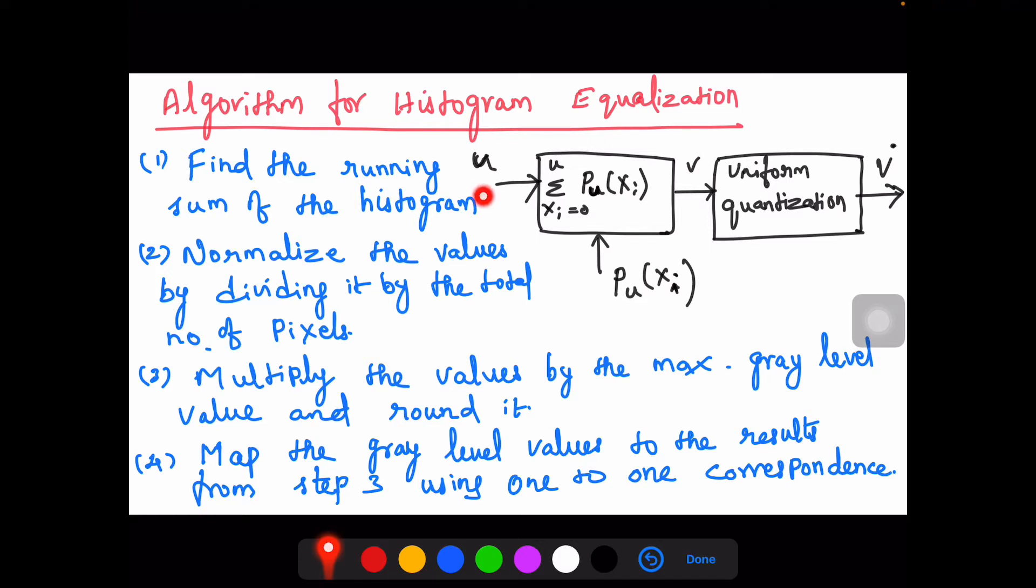Let us take U to be the original image and V to be the uniform quantized image. By representing it, you will apply quantization and you will get it. What does that mean? We will see it entirely in the next slide.